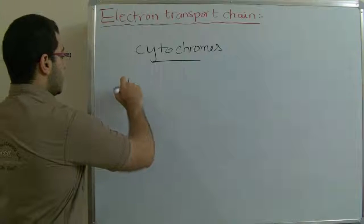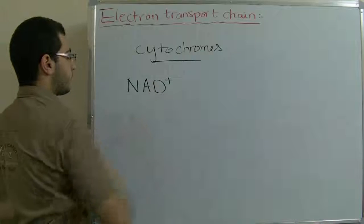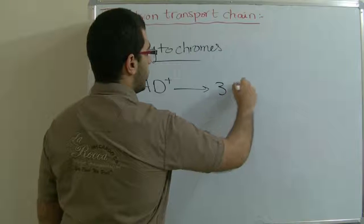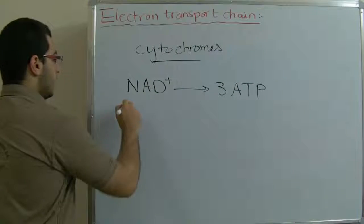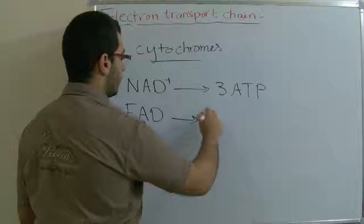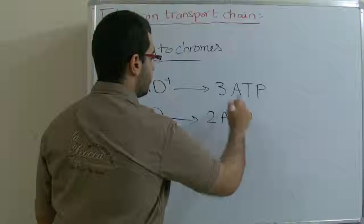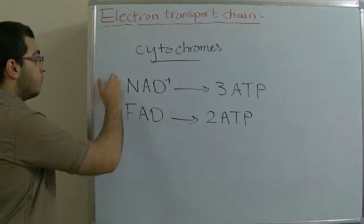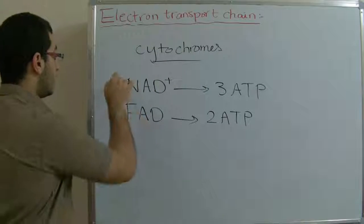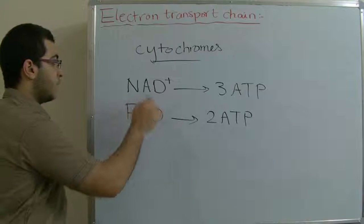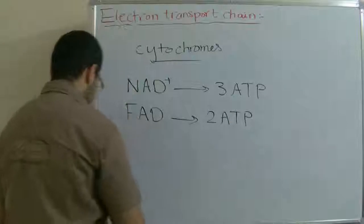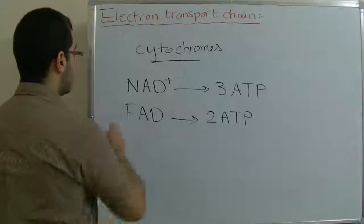When an NAD plus moves from one cytochrome to another, three ATP molecules are produced. When an FAD molecule passes from one cytochrome to another, two ATP molecules are produced. So when a hydrogen carrier moves from one electron carrier to another, an amount of energy is produced that varies according to the type of this electron carrier. NAD plus gets three ATP molecules, FAD gets two ATP molecules. This is the first thing.